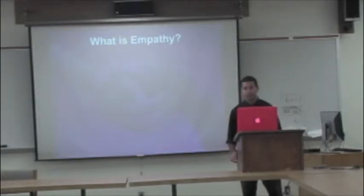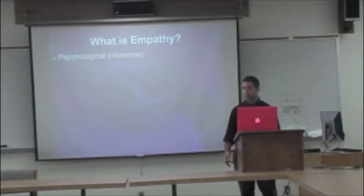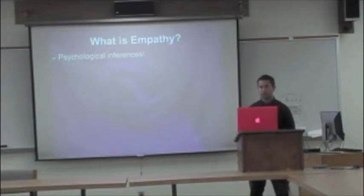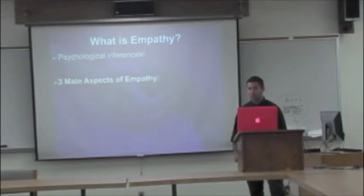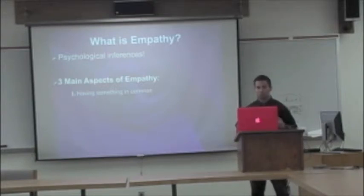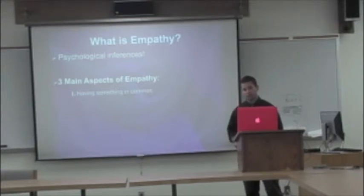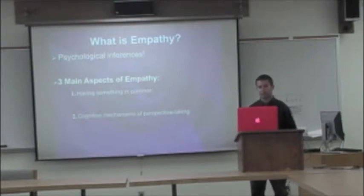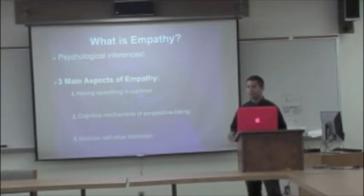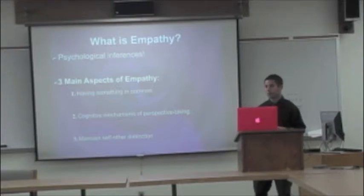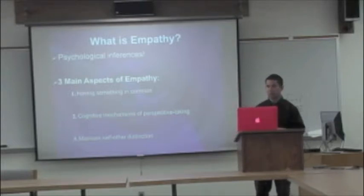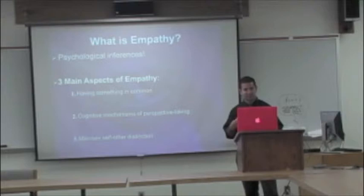What is empathy? Empathy is based on psychological inferences about emotional states that depend on specific social context. What are the three main aspects of empathy? The first is that feeling of having something in common with another person that allows you to understand and feel their feelings. Second is having the cognitive mechanisms of perspective taking — being able to take the other person's perspective. And lastly, is the ability to maintain a self-other distinction during social and interpersonal interactions. A very important part of being able to feel another person's feelings is to know that they are another person — they're not you.